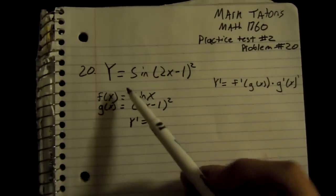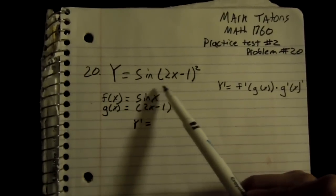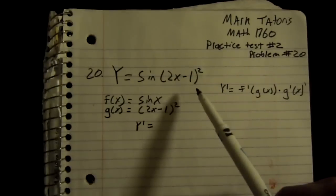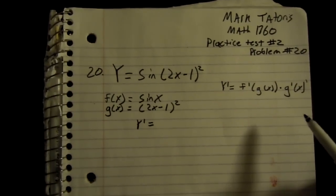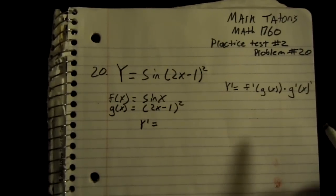It wants us to find the derivative of sine times 2x minus 1 squared. In order to do that, you have to find the inside and the outside function.